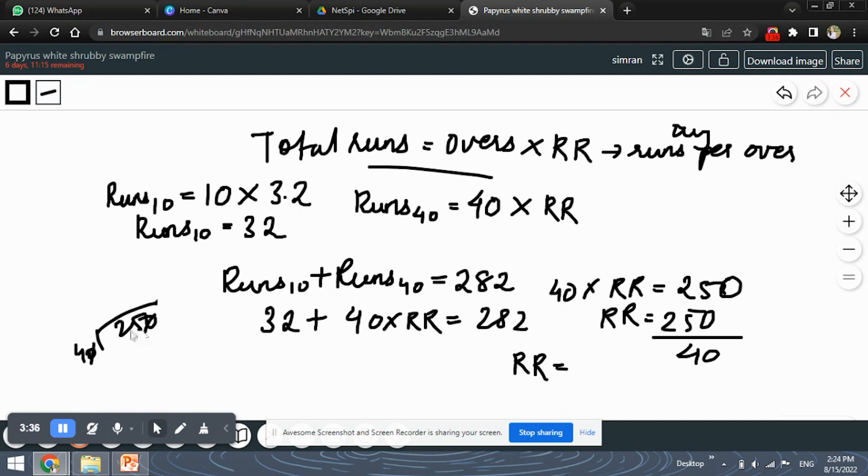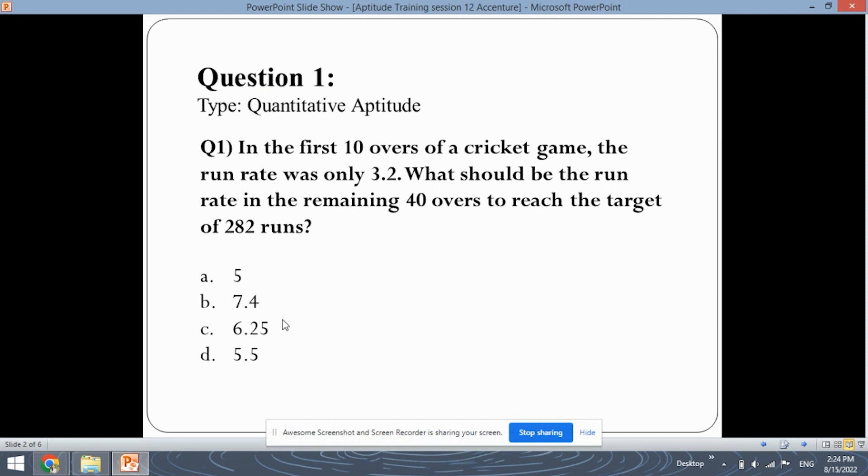Now, RR will remain and you can divide 250 upon 40. So the answer that you will get is, let's solve, so the zeros will get cancelled, so 4, 6 are 24, 2 are 8 and 5 are, so 6.25 will be the answer. Let's see whether it is present in the options, yes, option C, 6.25 will be the answer.